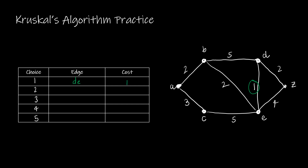Then I'm looking at all of the other costs on my graph, and we can see I have quite a few twos. I'll choose a two — it doesn't matter which one. I'm going to choose DZ with a cost of two. Then I'm going to choose AB with a cost of two. I still have another two, and the only thing I have to worry about is does it create a circuit? It doesn't, so I'm going to choose BE with a cost of two. I'm really just choosing the cheapest cost each and every time.